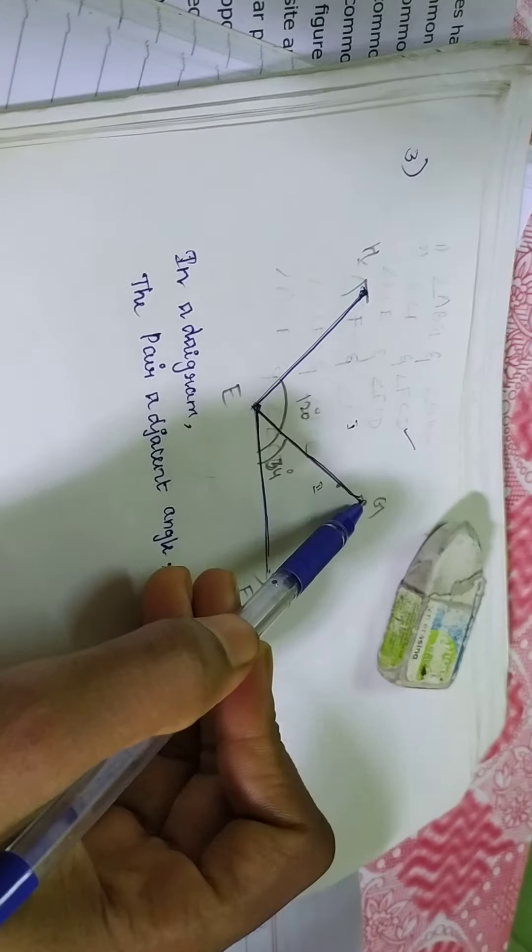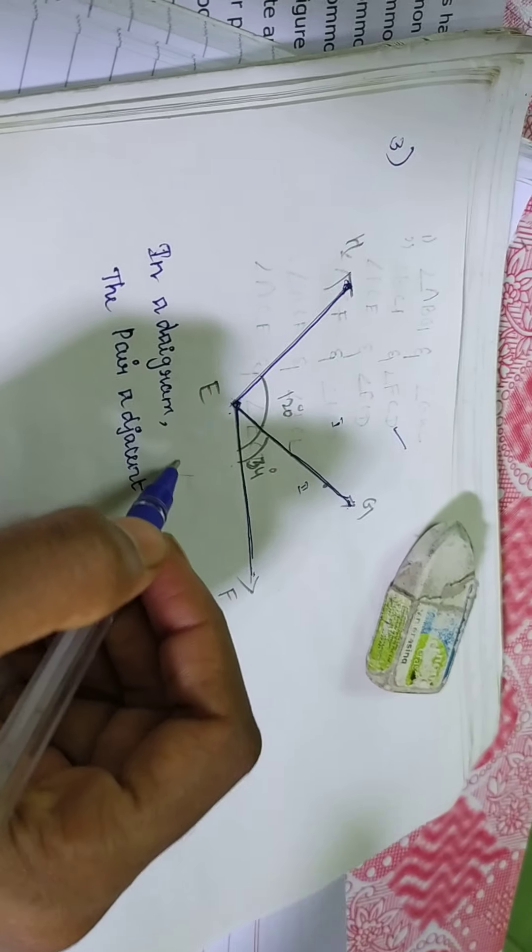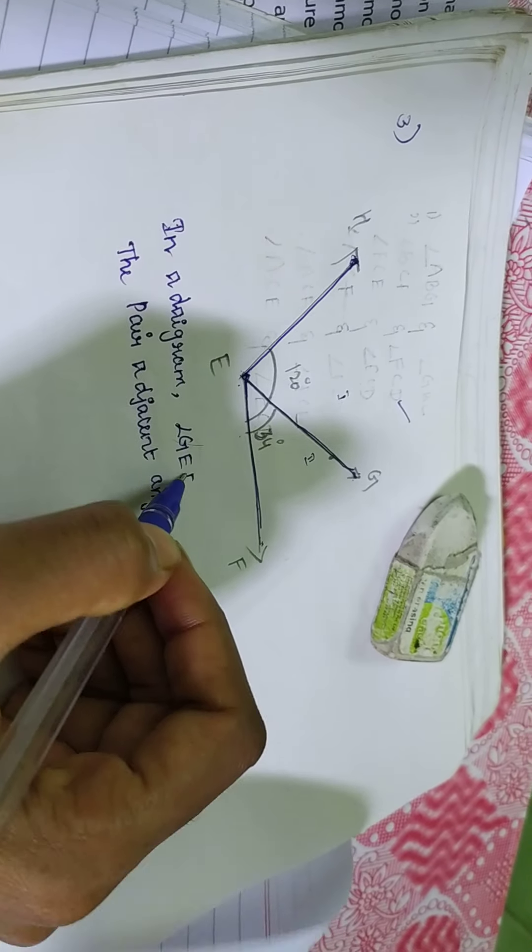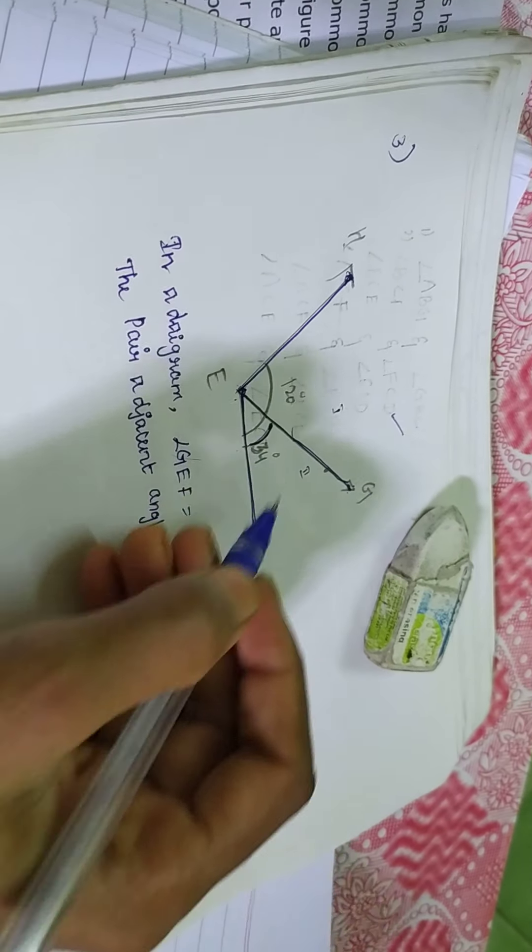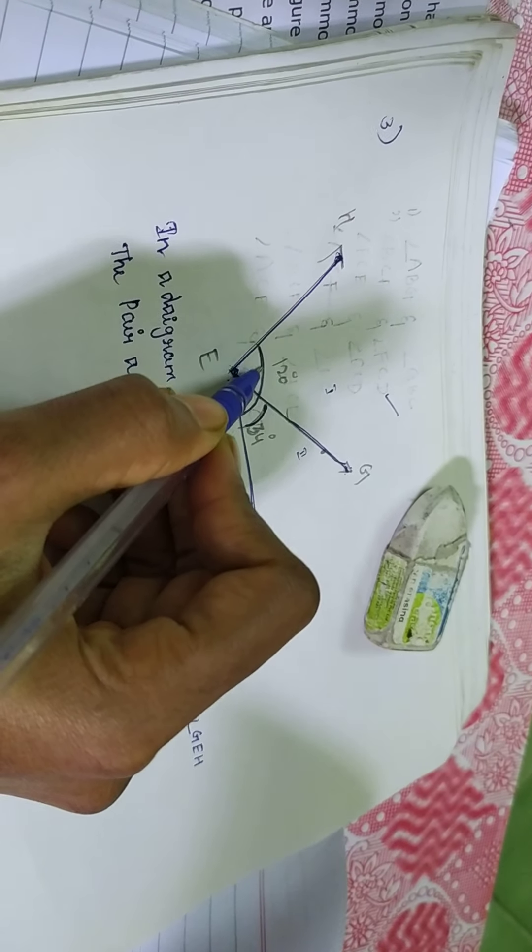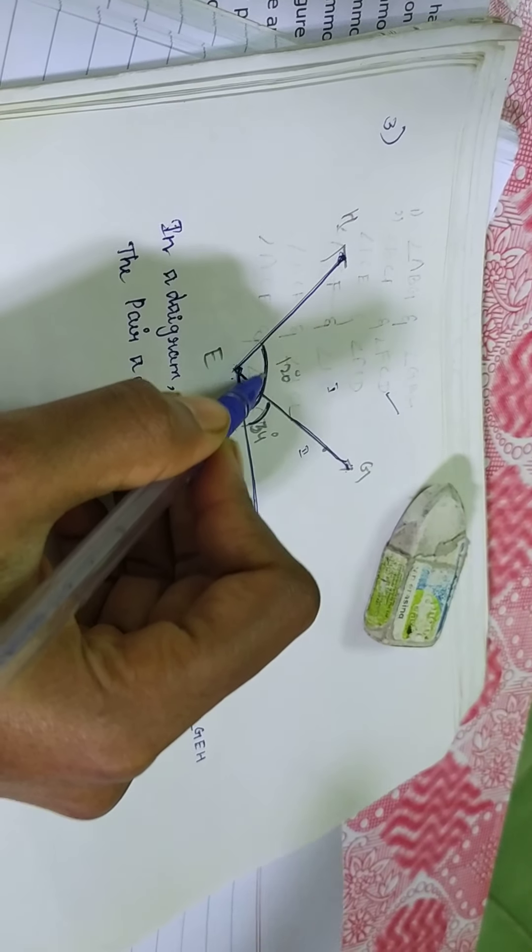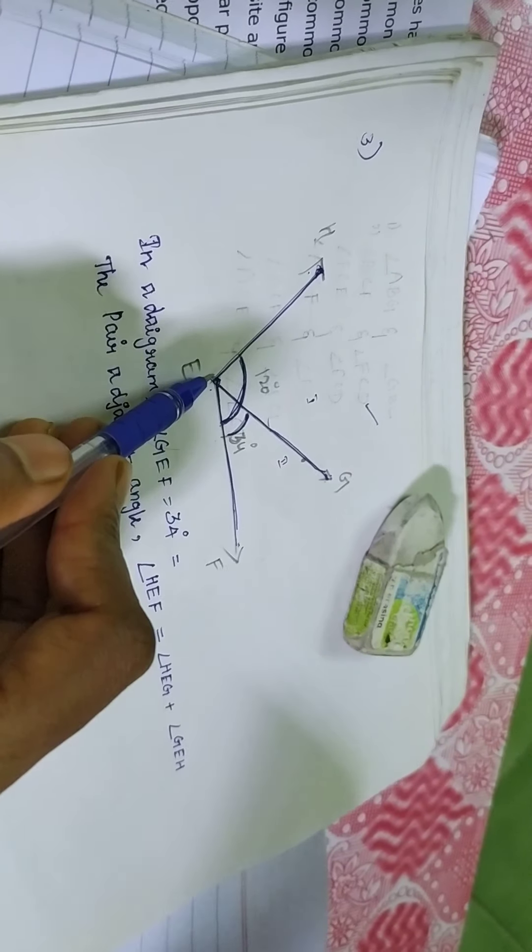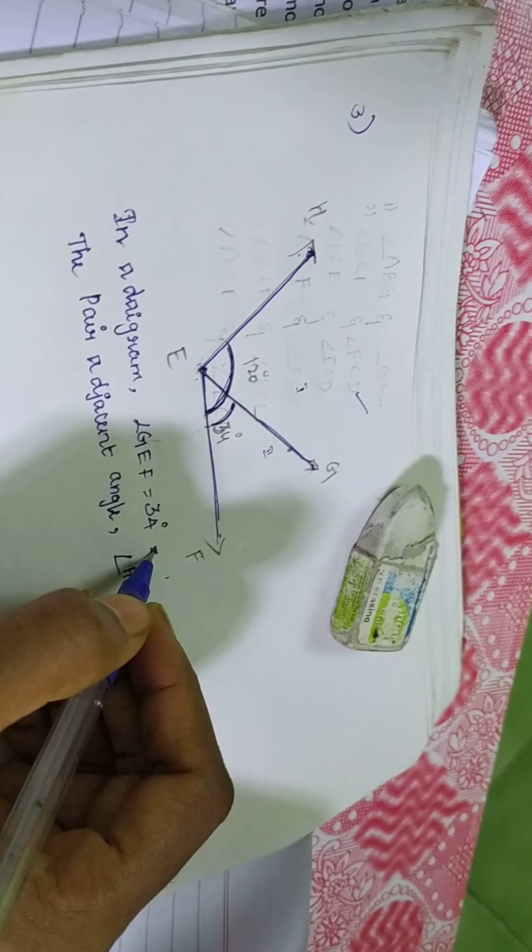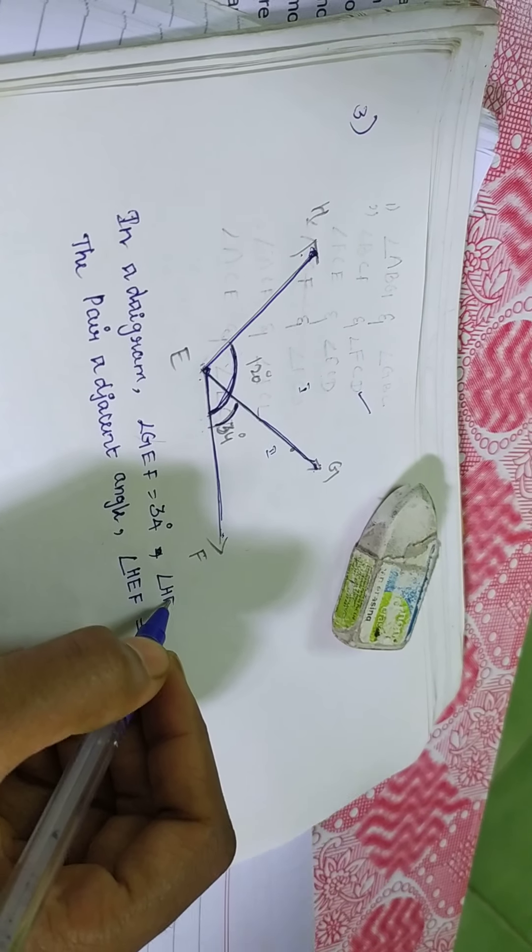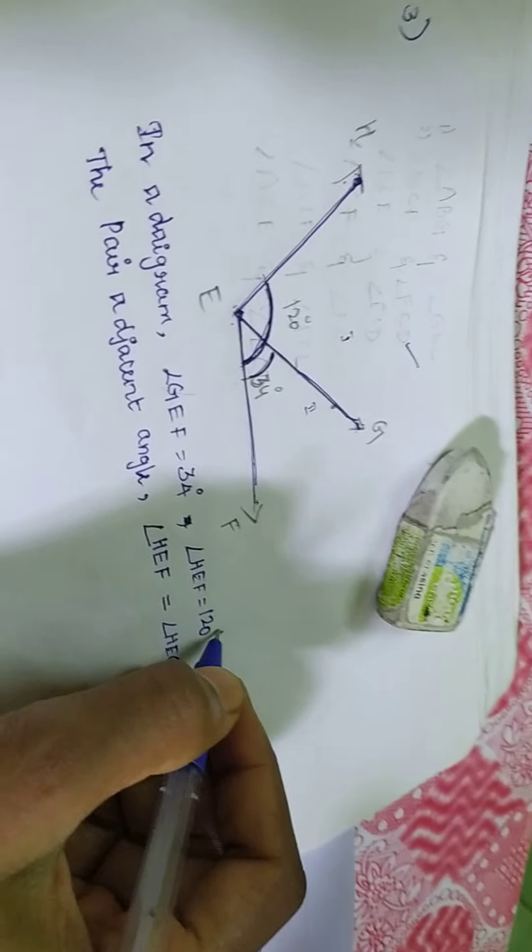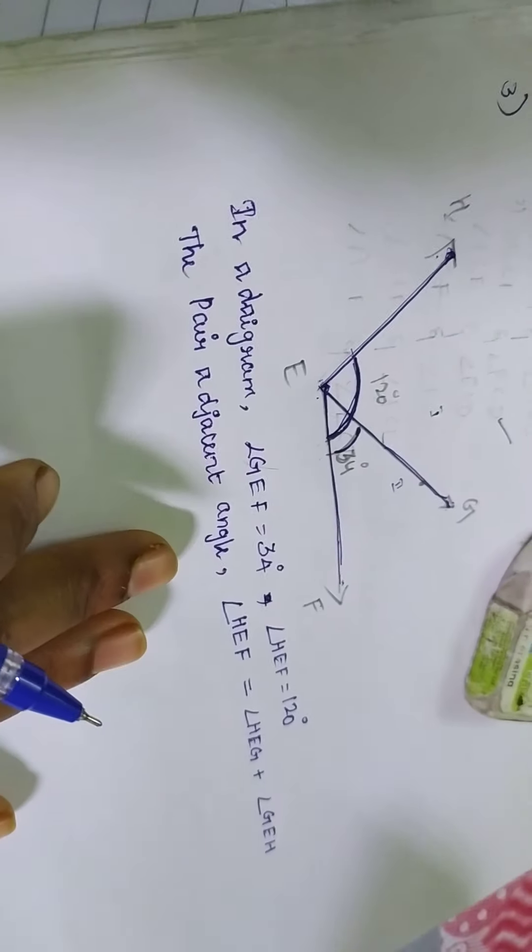Okay. Angle G E F. Angle G E F is equal to what they are given? 34 degrees. Then, 120 you should observe in this place. H E F. Both the angles had and they are given. So what angle H E F is equal to what you have? 120 degrees. Okay.